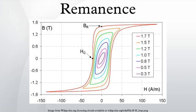Remanence, or remanent magnetization, or residual magnetism, is the magnetization left behind in a ferromagnetic material after an external magnetic field is removed. It is also the measure of that magnetization.